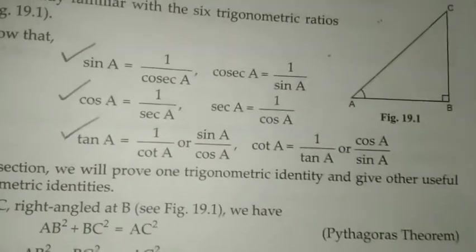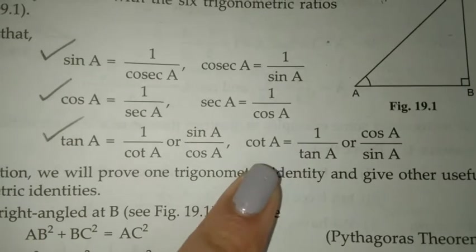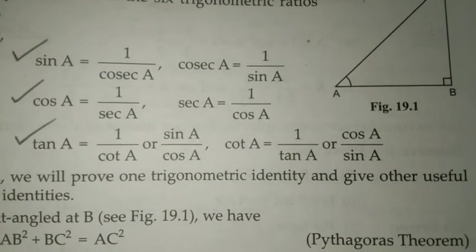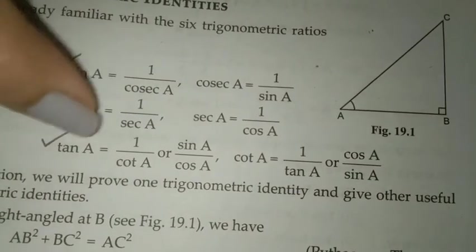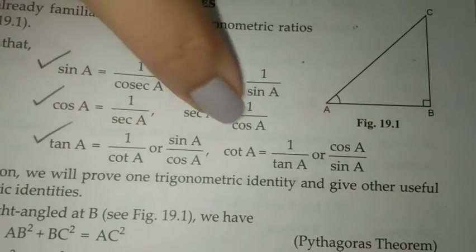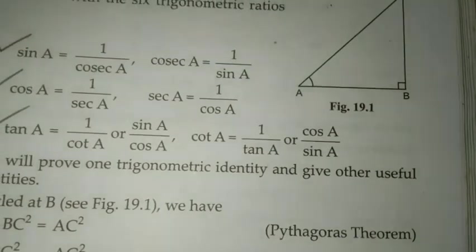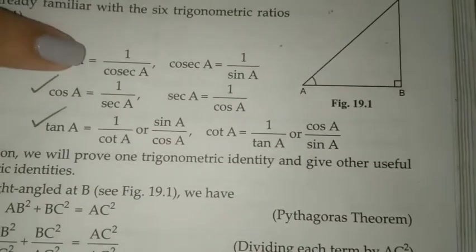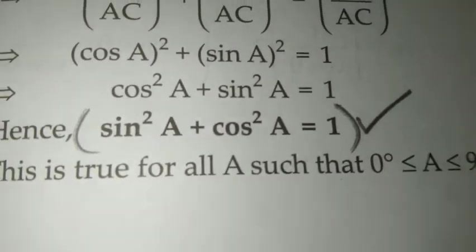For tan A and cot A, we have additional formulas: tan A equals one by cot A, or tan A equals sin A by cos A. Similarly, cot A equals one by tan A, which equals cos A by sin A. So these are the formulas with tan A equals sin A by cos A.